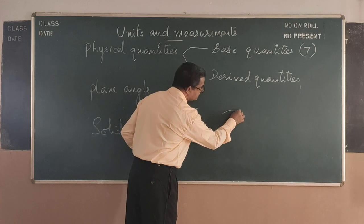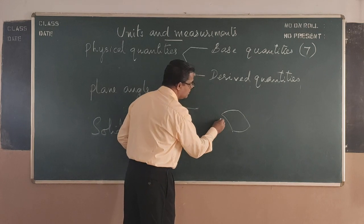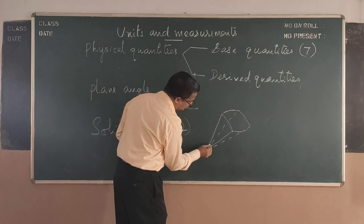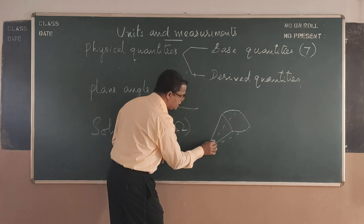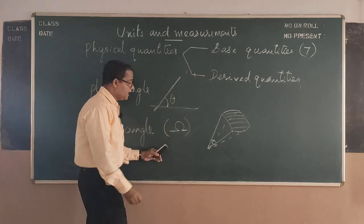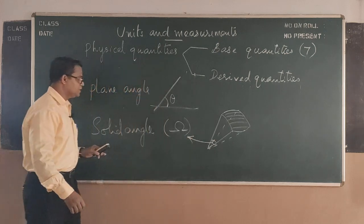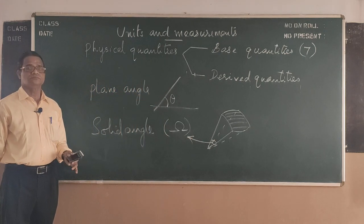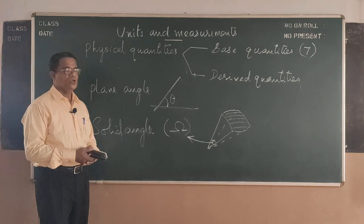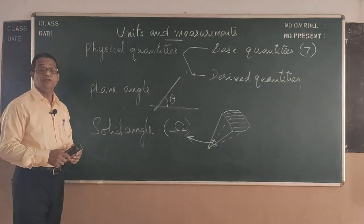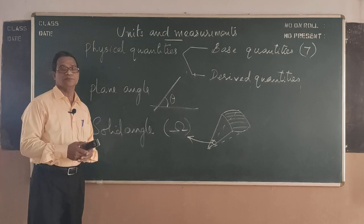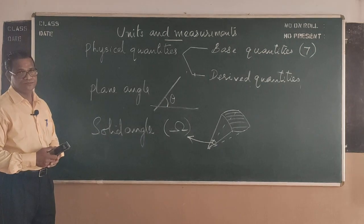If I represent like this, at this particular point there will be an angle coming that is subtended by this particular area. That angle is called solid angle. So these two quantities are listed under supplementary quantities. They come along with others. So only two supplementary quantities.